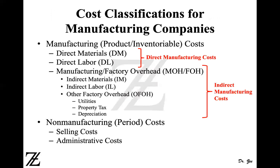Now, the cost classifications for manufacturing companies. Manufacturing companies are the most sophisticated. In merchandising companies, we don't have raw material, direct labor, or manufacturing overhead — we have merchandise. In service industries, we don't have a product. But in manufacturing companies, you have work-in-process inventories, raw material inventory, finished goods inventory, and several kinds of overheads, labor, and materials, which makes them more complicated.